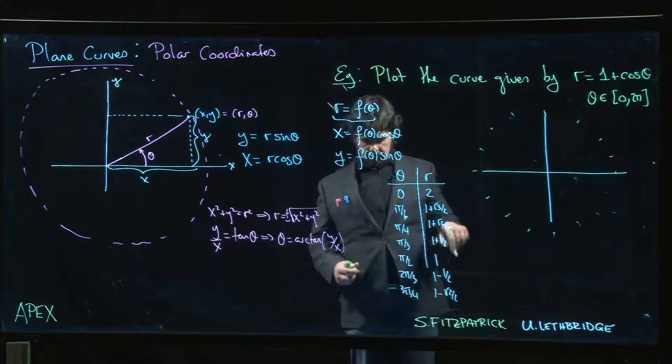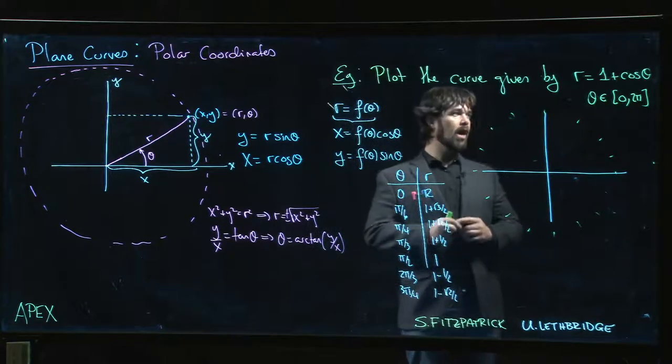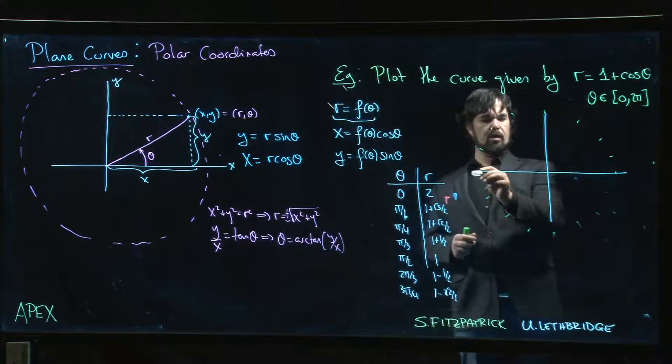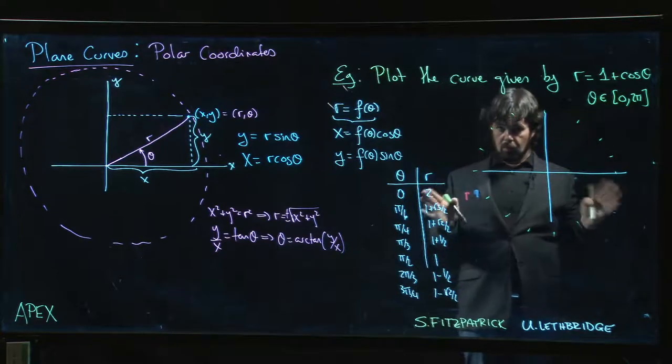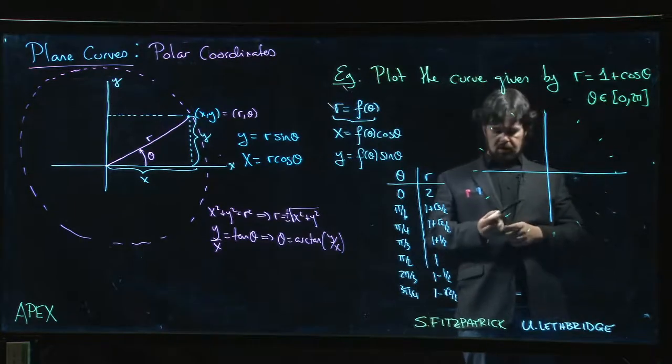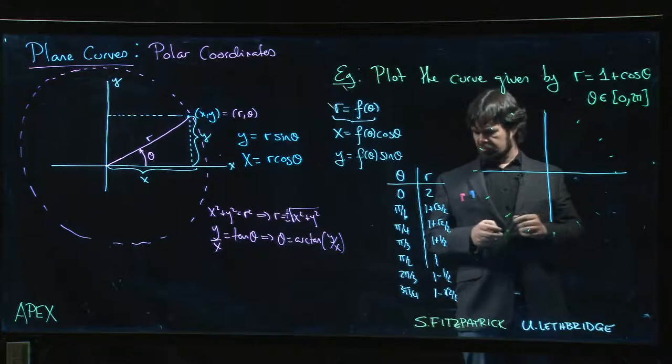When I get to pi, when I get down to here, actually I'm at r equals zero. One minus one I get zero. So you can try the first couple times actually just plotting those points explicitly.